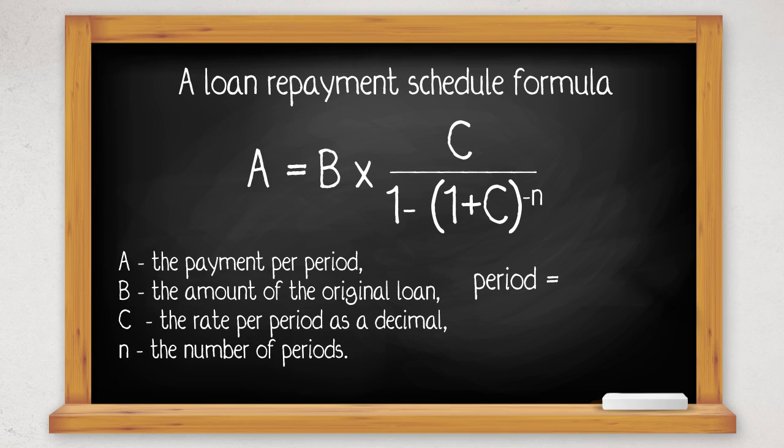So if the period was one month and we were finding the payment per month, then the rate per period as a decimal would be whatever the annual percentage rate was. We could change it into a decimal by dividing by 100, and then we would have to divide by 12 to change it into a rate per month, and the number of periods would be the number of months.